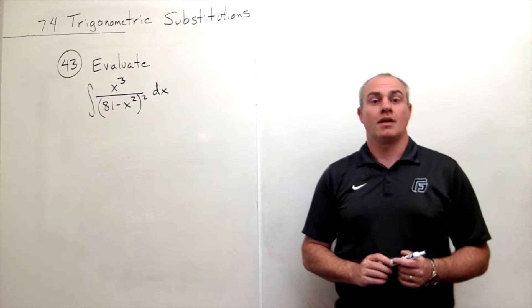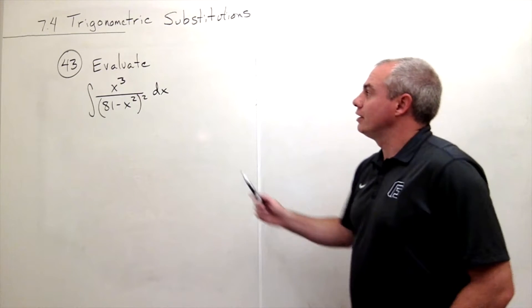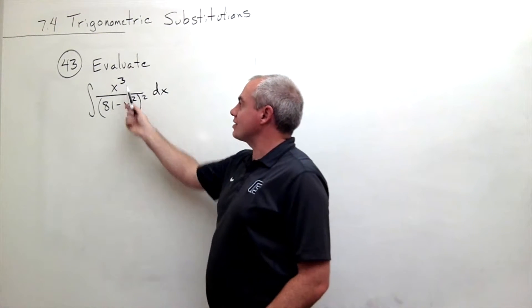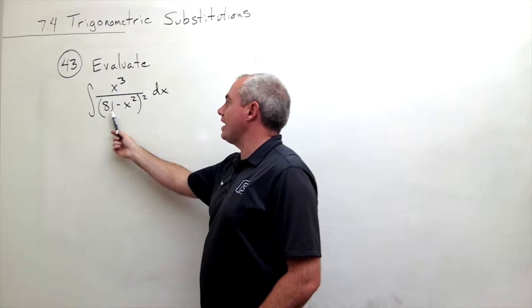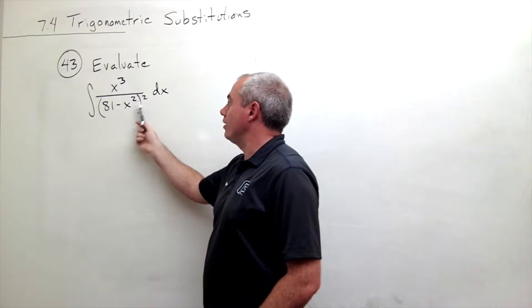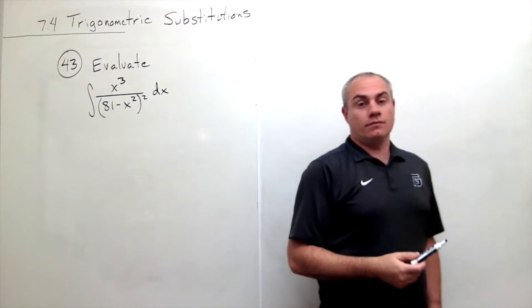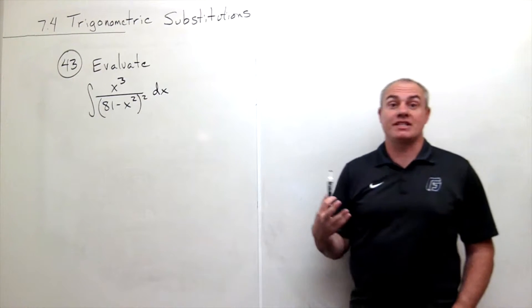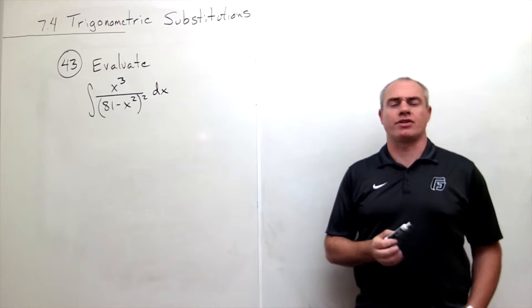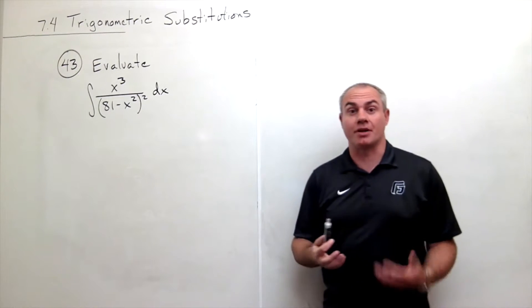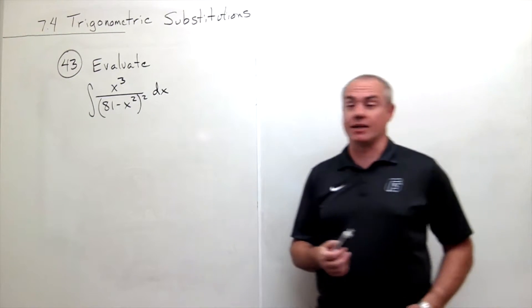I'm the Calculus Professor and today I'll be talking to you about trigonometric substitution. In problem number 43, we'd like to evaluate the integral of x cubed divided by 81 minus x squared quantity squared dx. And as in all of these types of problems, we want to start out asking the question: what type of trigonometric substitution are we dealing with here?